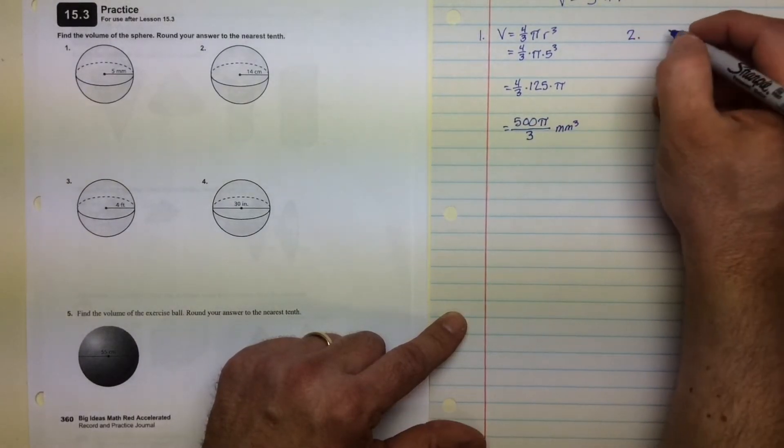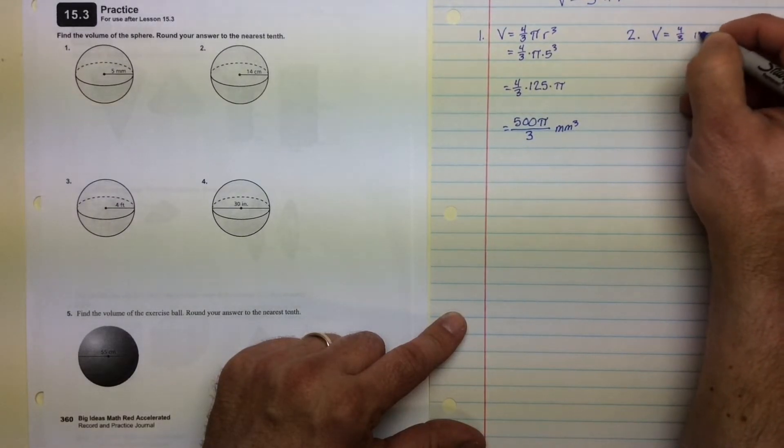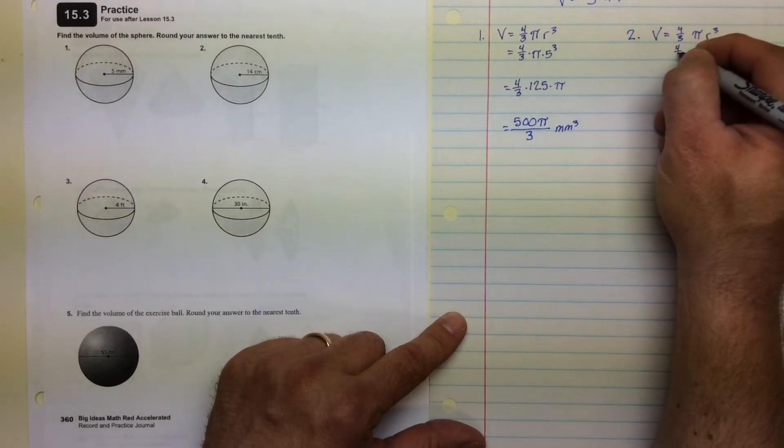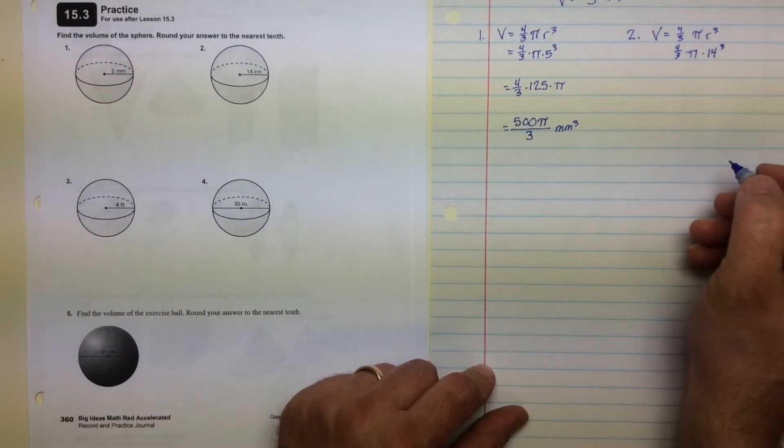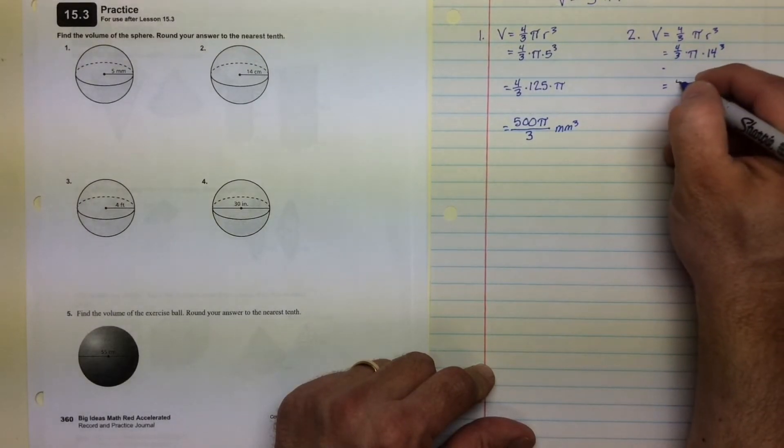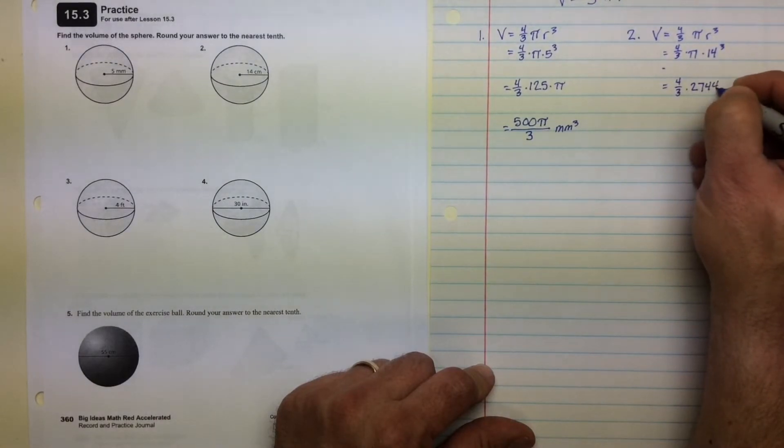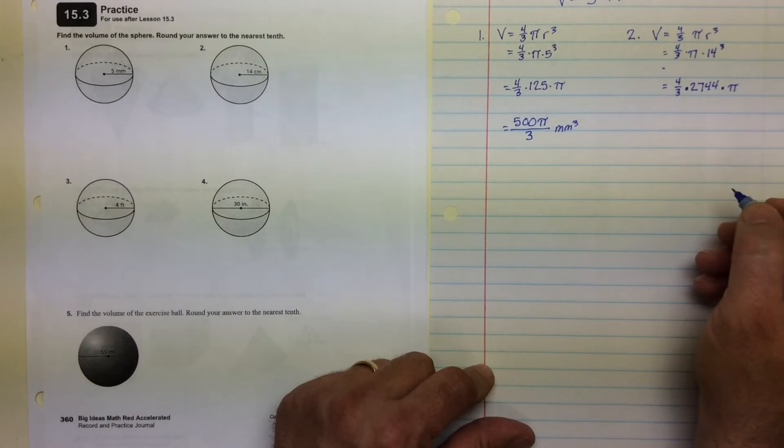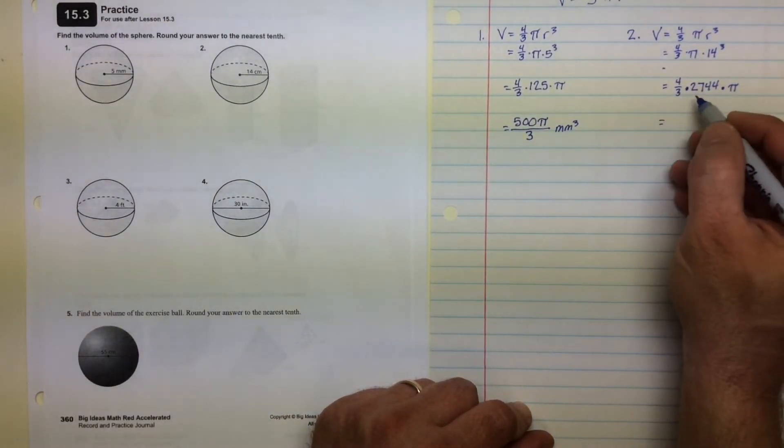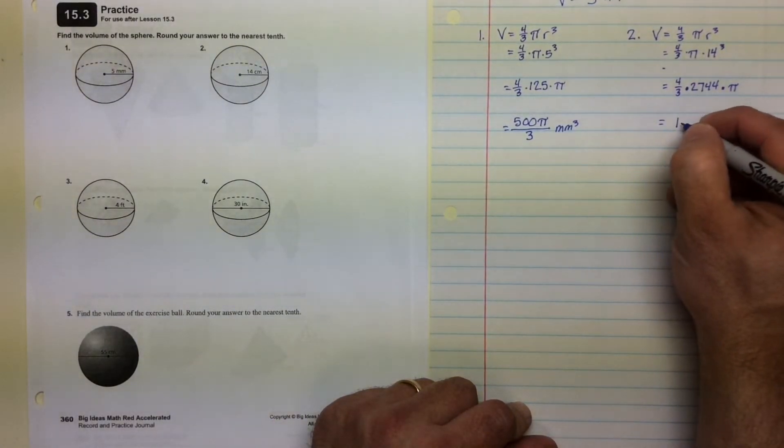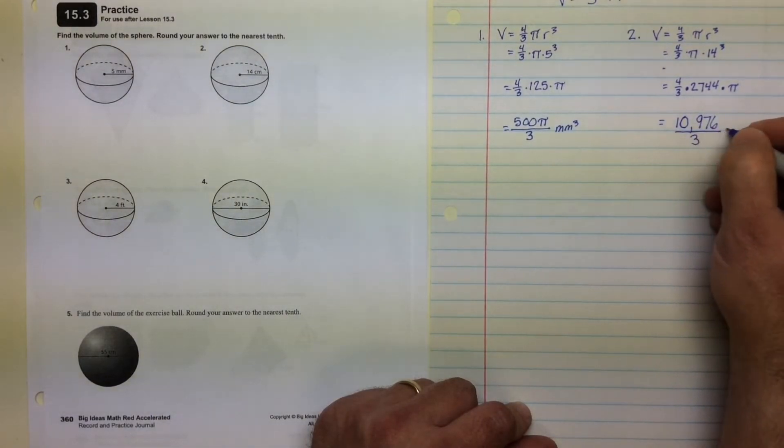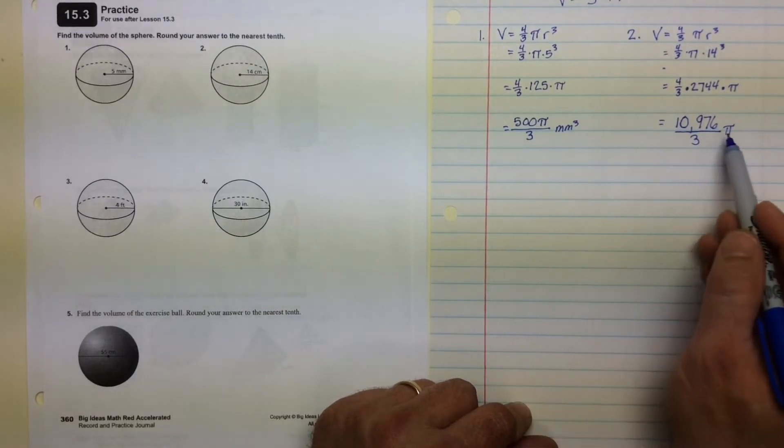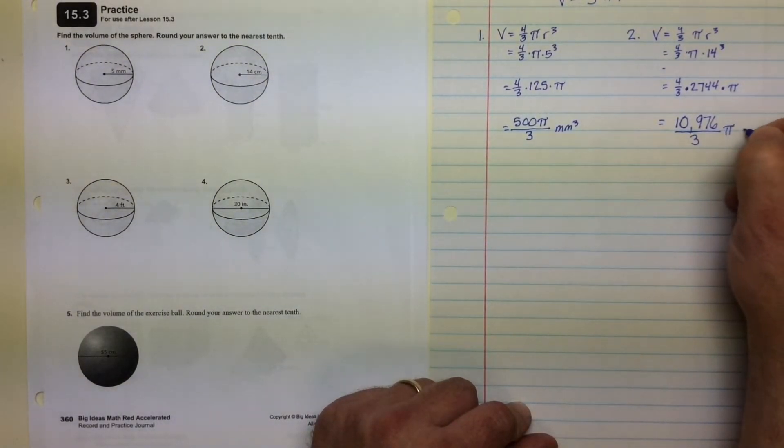Number 2, same kind of problem, not much of a variation here. Four-thirds pi r cubed, which will be four-thirds times pi. This time the radius is 14, so we put it in there, 14 to the third power. 14 to the third power is 2,744. So now I have four-thirds times 2,744 times pi. Again, not divisible by 3, but I can multiply it by 4. 2,744 times 4 would be 10,976 over 3 pi. Now, I put pi up in the numerator here. I'm putting it out next to the fraction bar here. Both of those are correct. Centimeters cubed. I actually like this a little better.